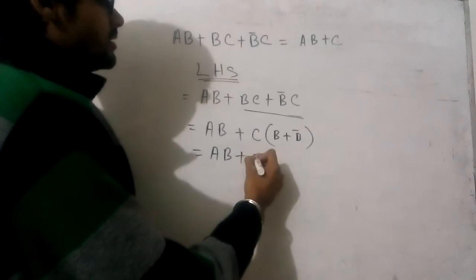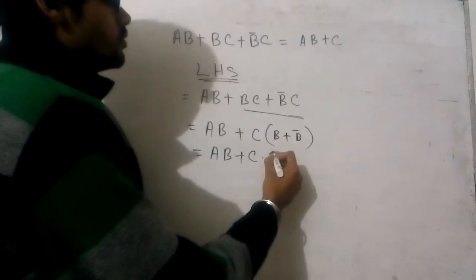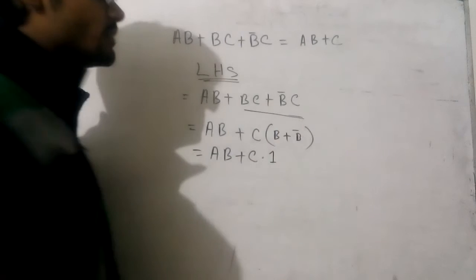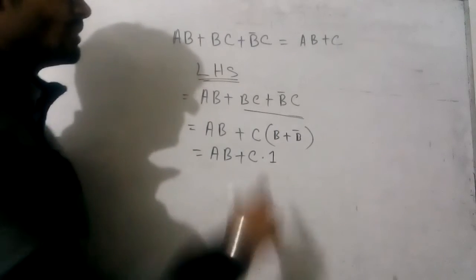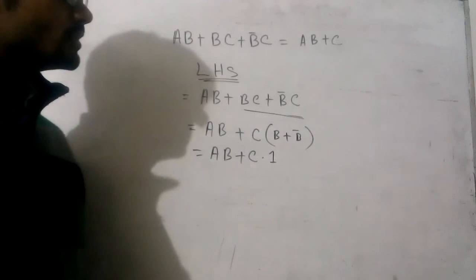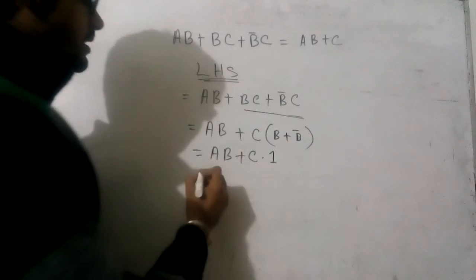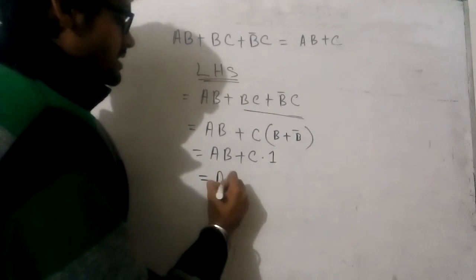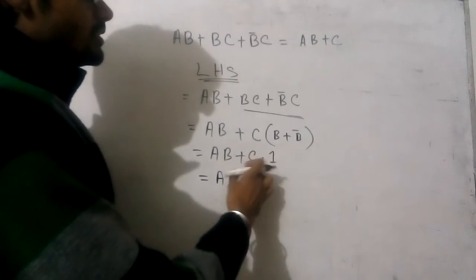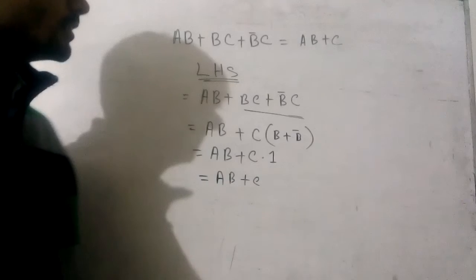So, AB plus C into 1, because B plus B bar. B plus B bar is 1, we know it. So we can write it now: AB plus C, because C into 1 is C.